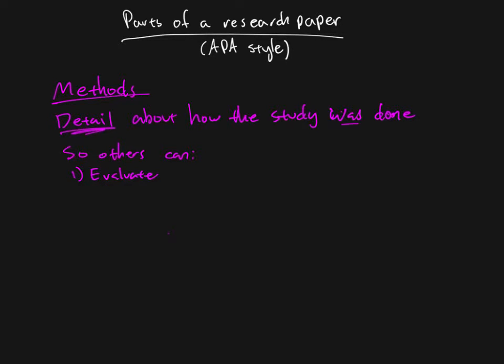Maybe the way that they measured a particular variable could be done better. Maybe there's some issue with the way that they measured that variable. So by giving the details, this goes back to science being a public process. We're putting the details out there so that they're open to criticism, open to critiques to see if there's potentially flaws with them.